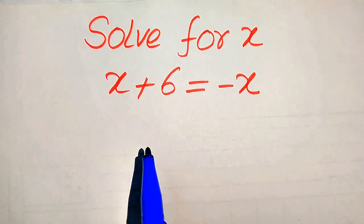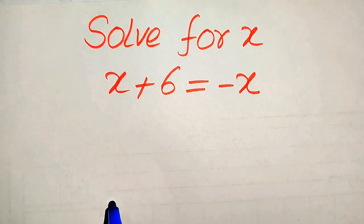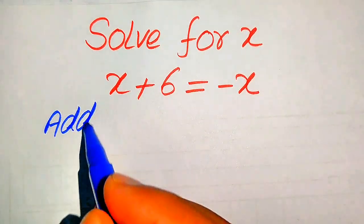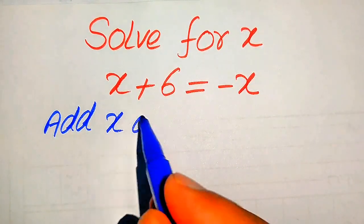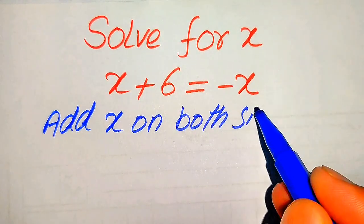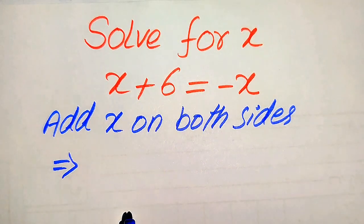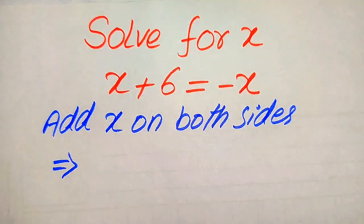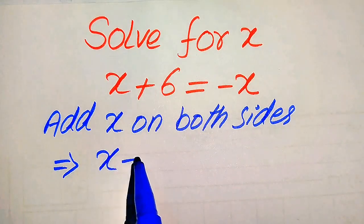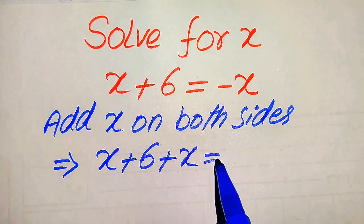First we need to move the variable terms to the left hand side. For this we need to add x on both sides. In order to move the variable terms to the left hand side, we will add x on both sides. After adding x on both sides, we will get x plus 6 plus x equals...